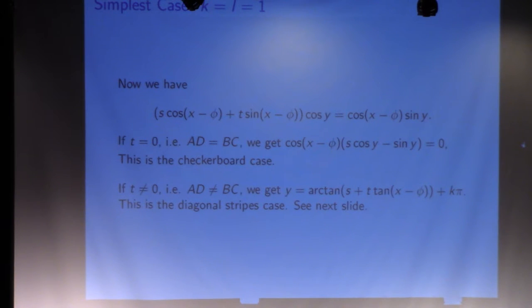First, when t equals zero, we get the checkerboard case. And when t is not zero, we solve for y, we end up with this function, which just maps to the diagonal stripe case we saw before.